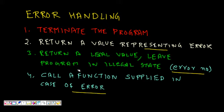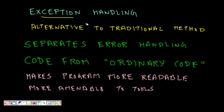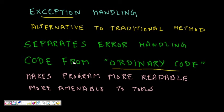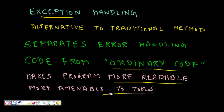C++ provides exception handling as an alternative to traditional methods. It separates error handling code from the ordinary code, so you have clean code where error handling is done separately and the normal logic is written separately. This makes programs more readable and more amenable to tools that read and generate code.